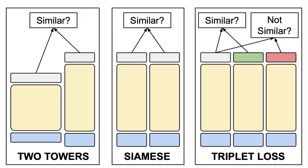Hi everyone, and welcome back to my channel. In this video, we will talk about three very important architectures that are commonly used in deep learning: two towers, Siamese networks, and the triplet loss.